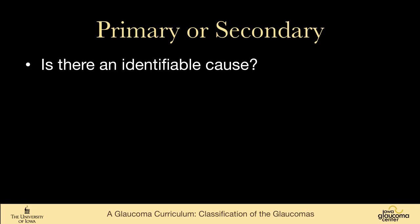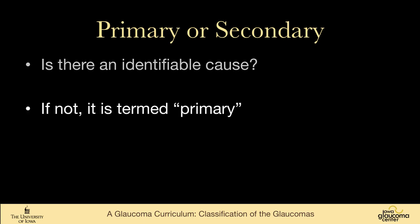Is there an identifiable cause? Is it a primary disease or is it secondary? If it's not identifiable as a secondary glaucoma we call it primary — in other words, we really don't know why the patient has the disease.